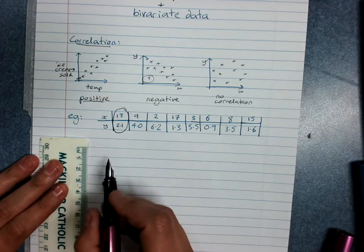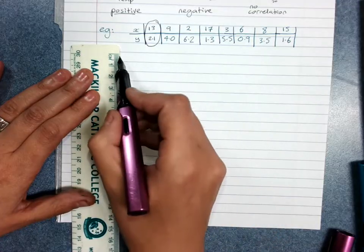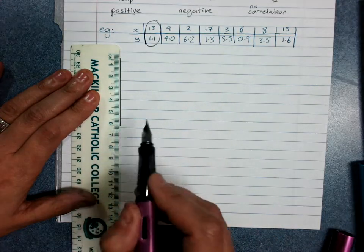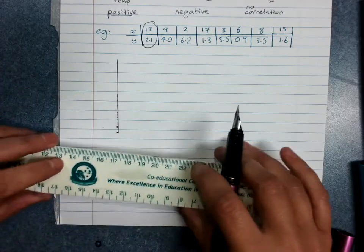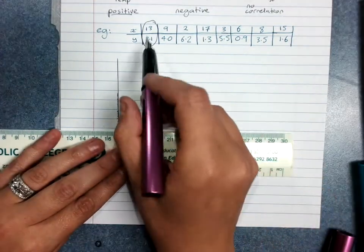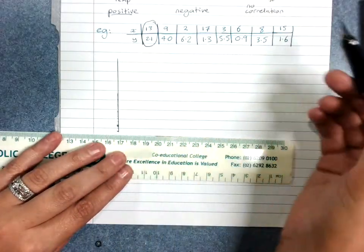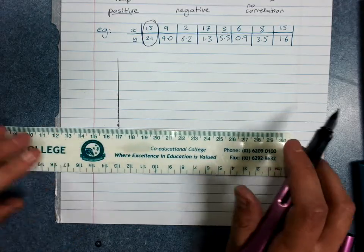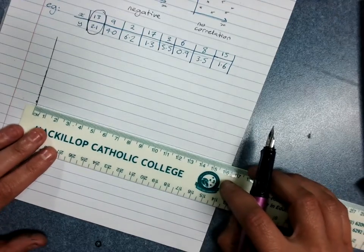So x has to go up to 7, so we can probably just use the lines for that. Let's move up here. Use a ruler. Try not to make a mess with your fountain pen. Sorry, y has to go up to about 7. x has to get across to, you possibly want to go up as high as 18. So let's go up by 2s here.